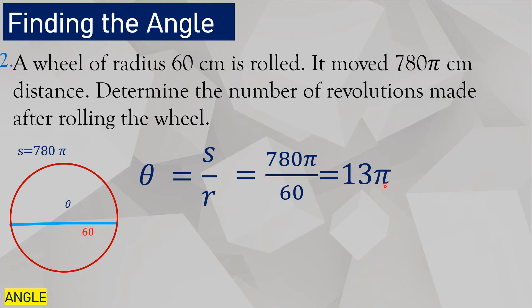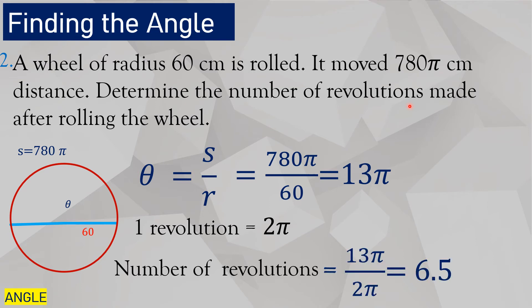However, you go back to the question: how many revolutions? We know that one revolution is 2 pi. So how can we get number of revolutions from 13 pi? Definitely, we just need to divide. 13 pi divided by 2 pi will give us 6.5 revolutions.